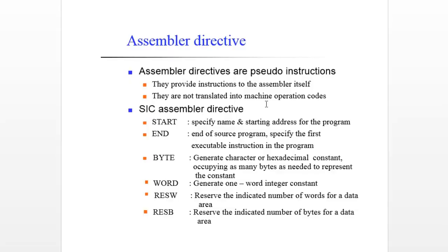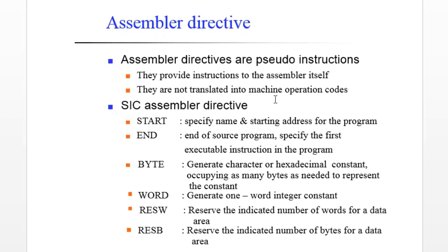In addition to the mnemonic machine instructions which appear in your program, we also have what is called assembler directives. What are assembler directives? They are instructions that direct the assembler to do something. Sometimes they are referred to as pseudo instructions. They indicate how an operand or a section of the program is to be processed by the assembler, and they are never going to be converted into machine code.